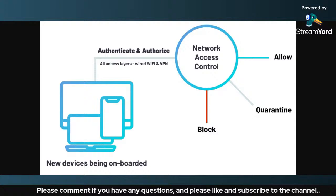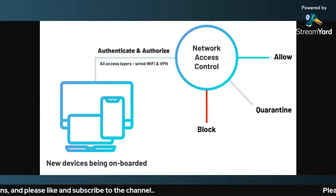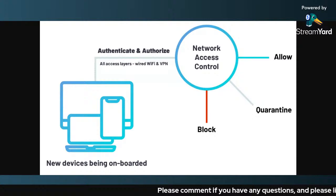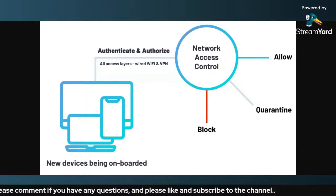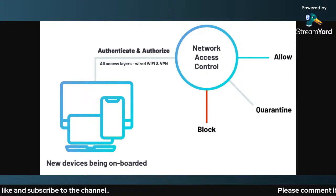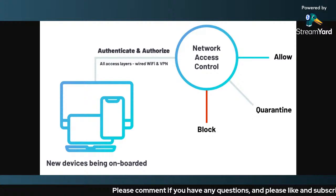When you implement a NAC solution, you implement a security baseline state by defining a policy. You specify which devices you will grant access to, which devices you will block, and which devices you will quarantine. These are the three resultant outcomes of having a Network Access Control in place. Whenever a new device comes on board, you authenticate it, authorize it, and take one of these three actions.